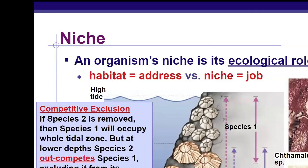There's often a confusion between habitat and niche, so it's important that we recognize the difference. The habitat is basically where an organism lives, and the niche is the role that organism plays within the ecosystem — its job, basically. So your house is your habitat, and then the role you play — the daughter, the son, the caregiver, the student, the person who takes out the trash — whatever your role is in your family, that's your niche.